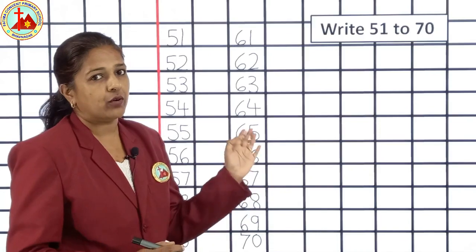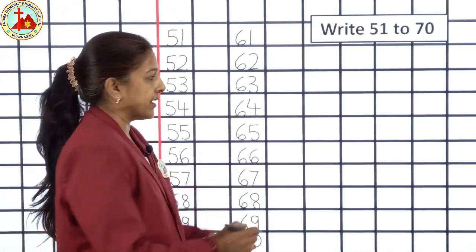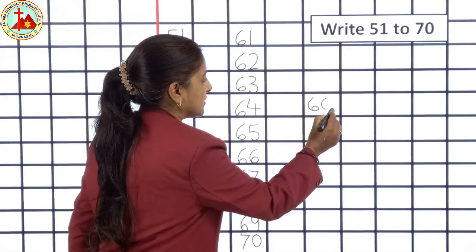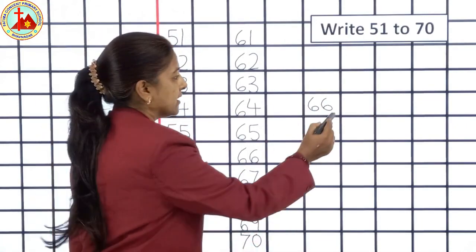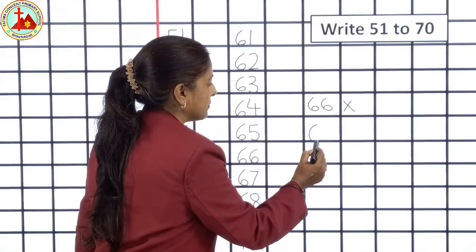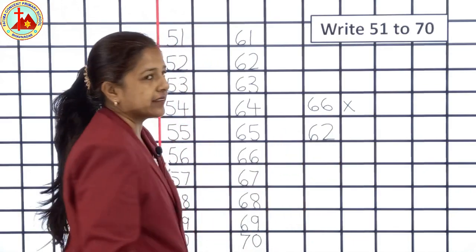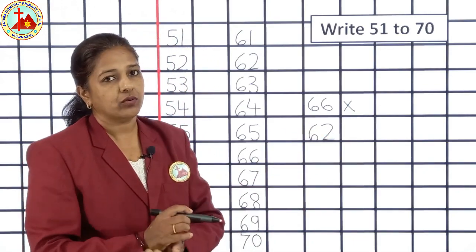So, this is the way you all have to write. 51 to 70. Touch the bottom line and write. Don't write like this. This is the wrong way. See how miss is writing? Miss is touching the bottom line and writing. So, like this only you all have to write.